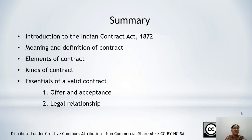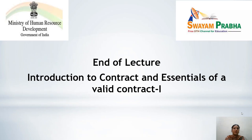To summarize today's lecture: we covered the Introduction to Indian Contract Act 1872, meaning and definition of contract, elements of contract including agreement and enforceability at law, kinds of contract divided on three bases, and essentials of a valid contract. Under essentials, we discussed the first two components of Section 10 — offer and acceptance, and legal relationship. Thank you.